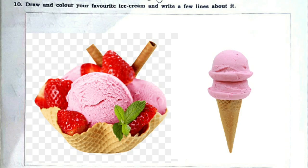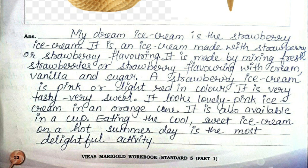Now last question, question number 10: draw and color your favorite ice cream and write a few lines about it. My dream ice cream is the strawberry ice cream. It is an ice cream made with strawberry or strawberry flavoring. It is made by mixing fresh strawberries or strawberry flavoring with cream, vanilla and sugar. A strawberry ice cream is pink or light red in color. It is very tasty and very sweet. It looks like a lovely pink ice cream in an orange cone. It is also available in a cup. Eating the cool sweet ice cream on a hot summer day is the most delightful activity.